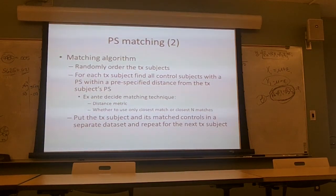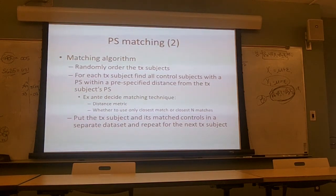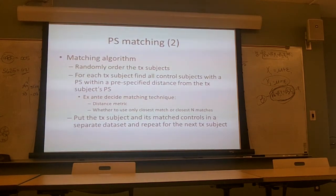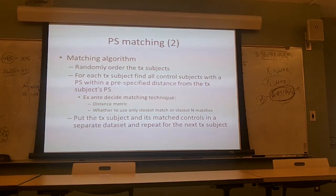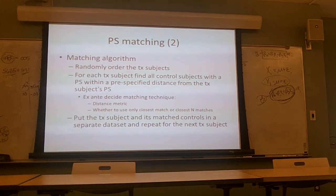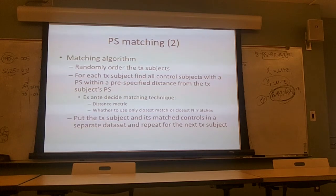You iterate through until there are no treatment subjects or control subjects left with a good match. You can exhaust either side. The point is we're going for accuracy — proximity in terms of matches — and throwing out information about people who don't match well. We're getting homogeneity but potentially losing information and shrinking our sample size.